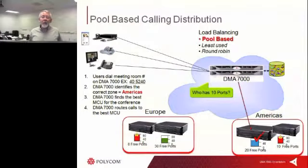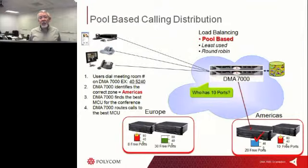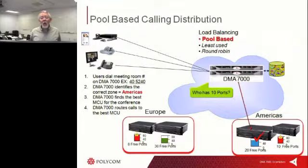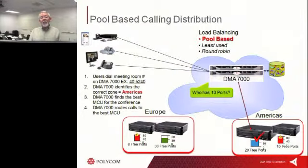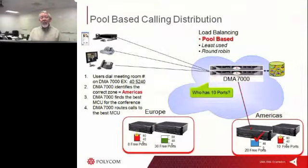How does DMA do its magic? As you configure your DMA, you set up a pool of resources, and those resources will be coming from multiple RMX or Kodian bridges. When someone initiates a call, they'll request certain levels of resources, and DMA compares that request to the available bridges that are online and can take a call at that time. Whichever bridge is least being used and fits in the pool requirement will be given the conference.